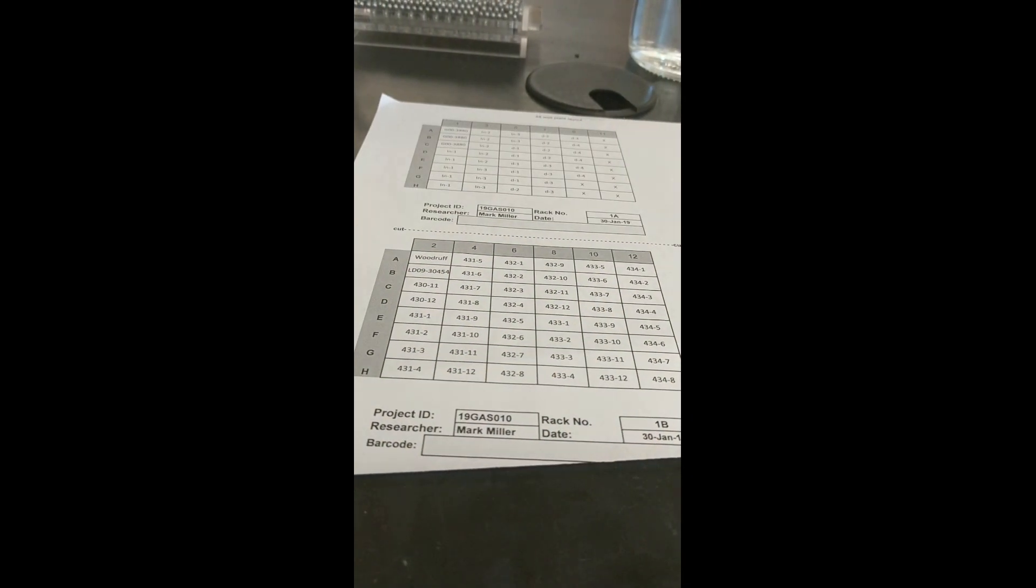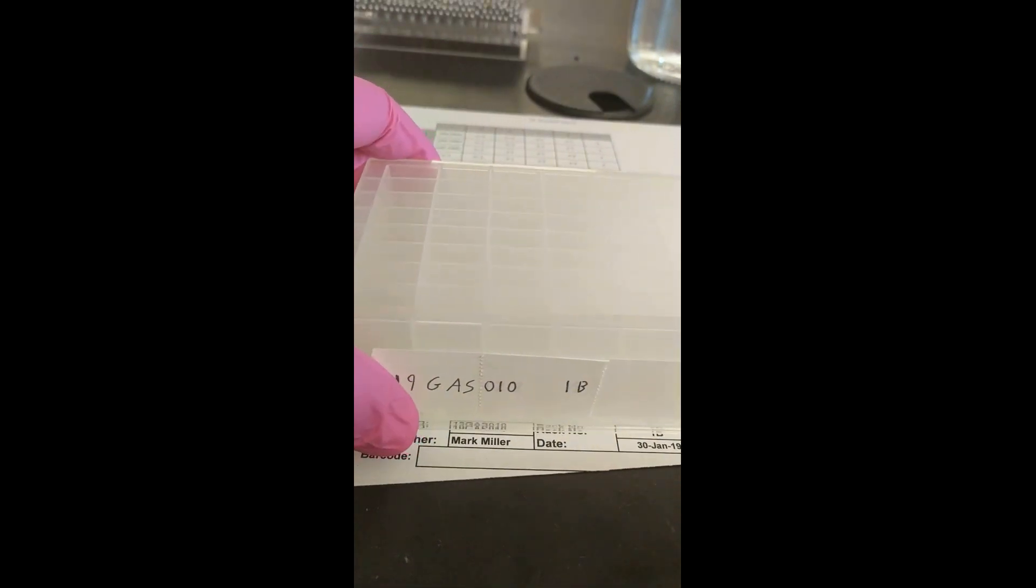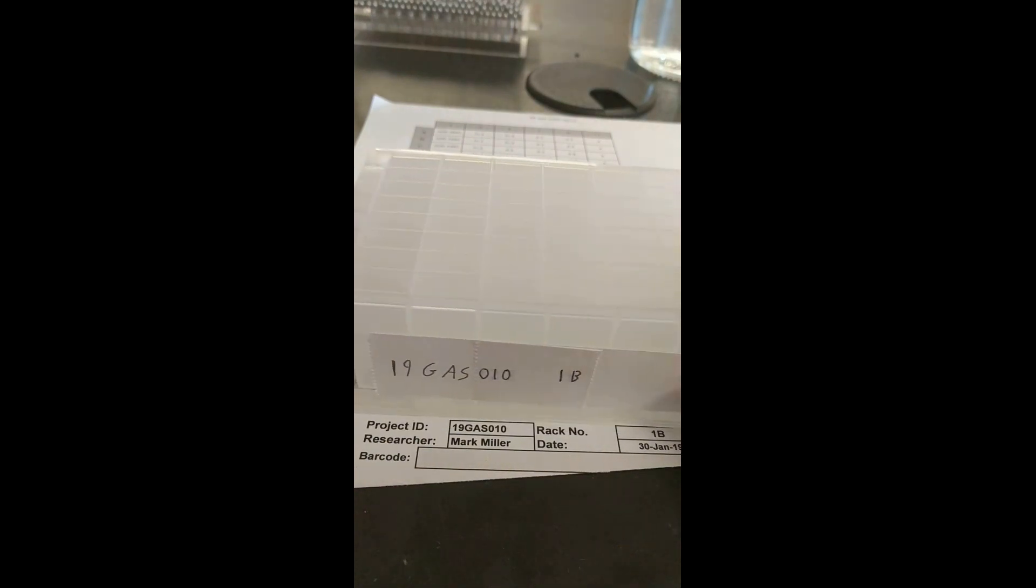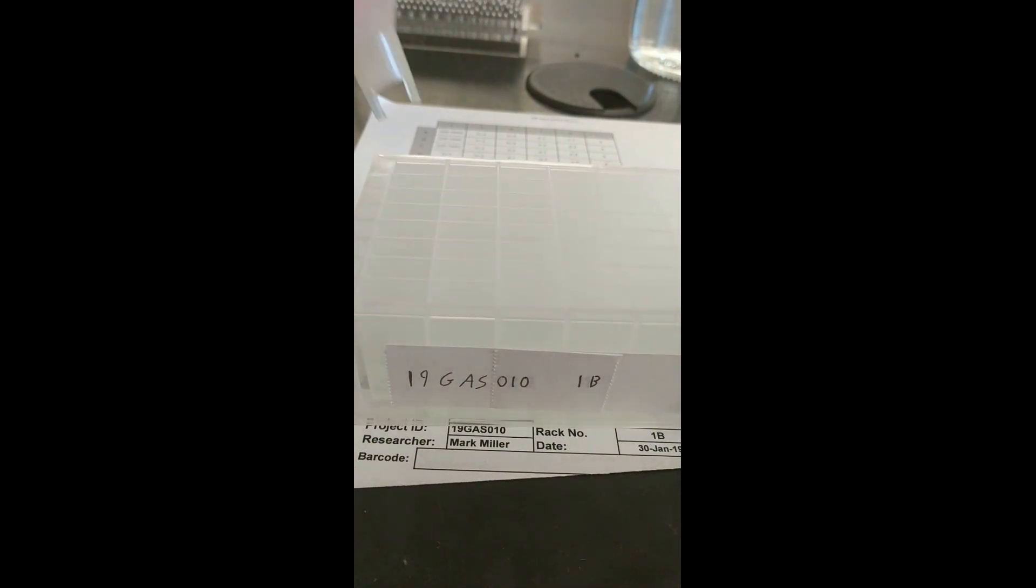First, we will take our planning diagram and put the 48-well plate upon it so that it lines up and we can see exactly what well we're looking at when we put the seed in. We will then proceed to fill each of the cells with five seeds.